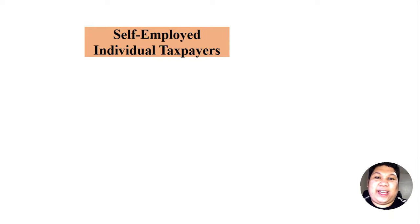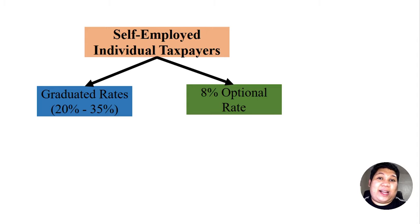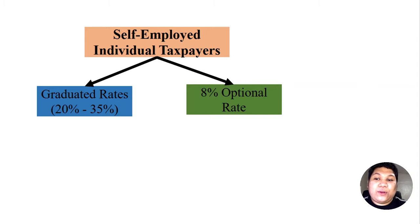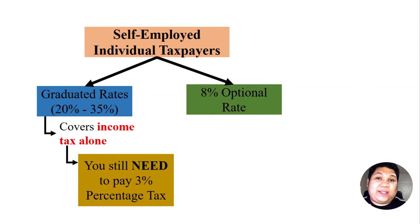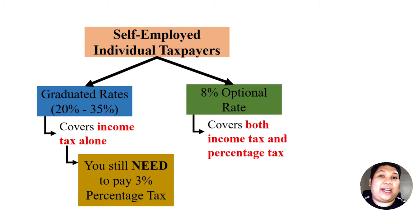Here is a summary diagram to facilitate better understanding of how 8% and graduated rates work. If you are a self-employed individual taxpayer, whether doing business or practicing your profession, and your annual gross sales and receipts do not exceed ₱3 million, you have the option to choose either graduated rates or the 8% optional rate. But if it exceeds ₱3 million or you are VAT registered, this option is not available. When choosing graduated rates, this covers income tax alone — meaning you still need to pay the 3% percentage tax on your gross sales. But if you choose the 8% optional rate, this covers both income tax and the 3% percentage tax, so you are no longer required to pay the 3% percentage tax separately.